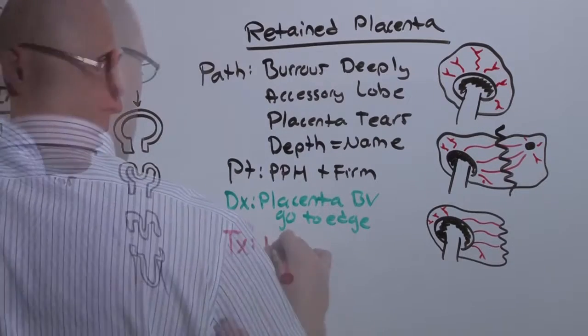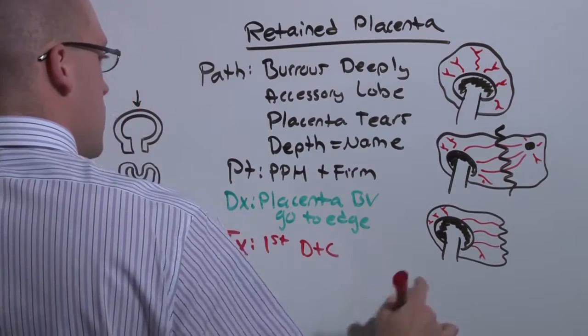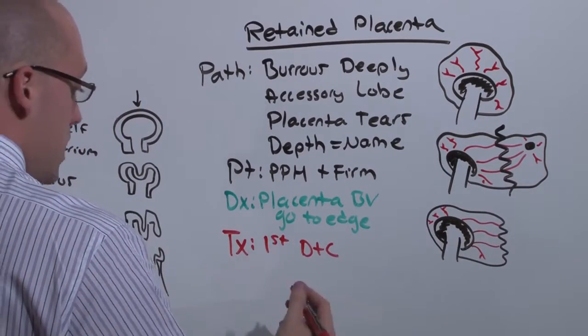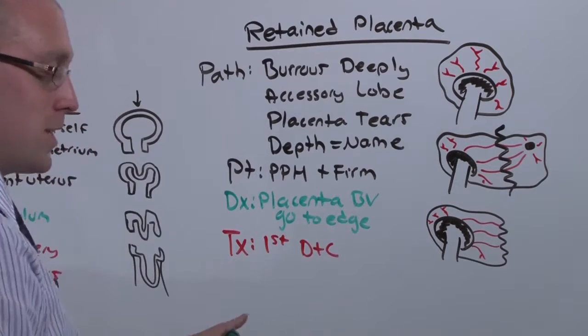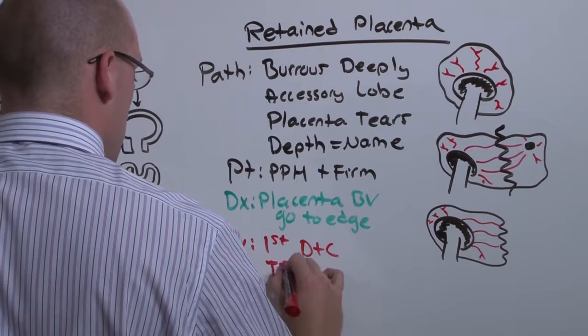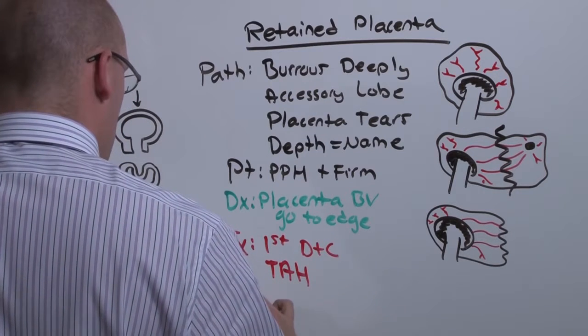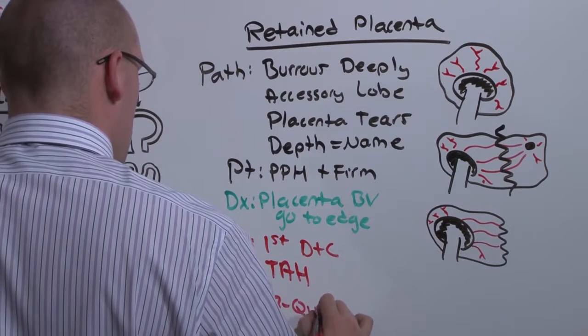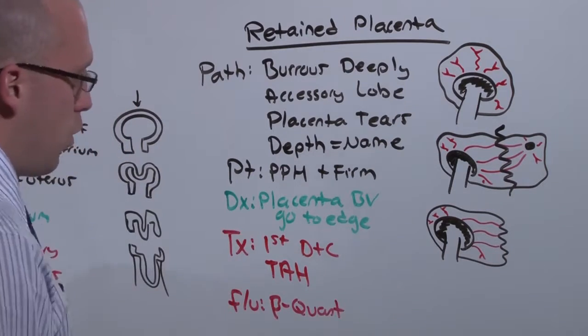The treatment is first to do a dilation and curettage. Try to scrape out everything that you can. If it continues to bleed, you may not be able to get deep enough with the D&C. In that case, you're going to have to do a total abdominal hysterectomy. And whatever you do, you're going to follow up the beta quant, because this is a way you can set yourself up for having choriocarcinoma.